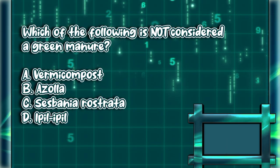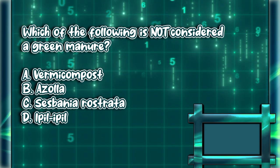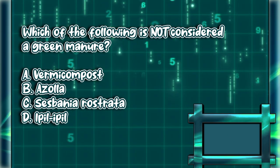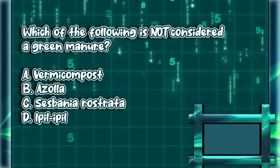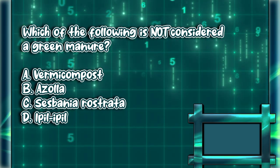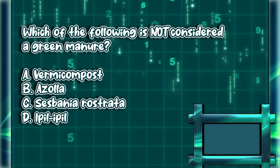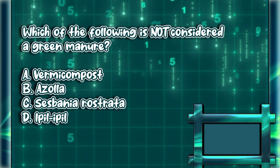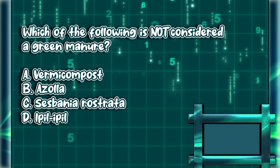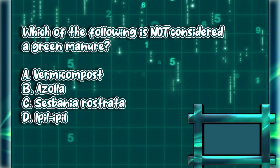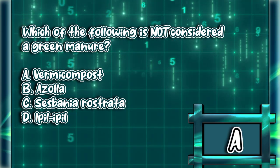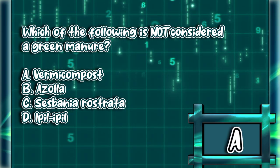Which of the following is not considered a green manure? A. Vermicompost. B. Azolla. C. Sesbania rostrata. D. Ethyl ethyl. The answer is letter A.